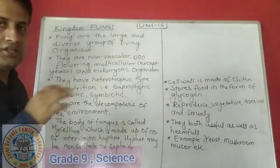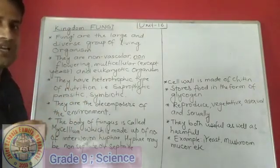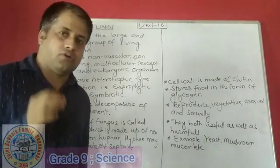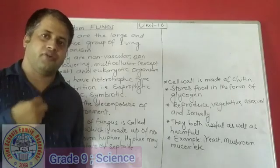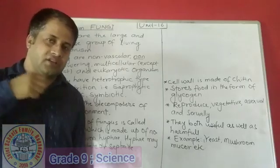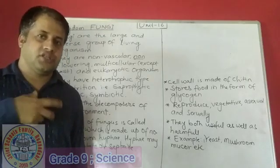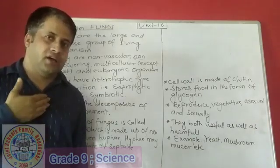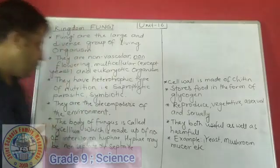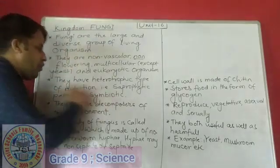Another type of nutrition present in fungi is parasitic nutrition. Parasites are organisms that live on the body of another organism — the host — and cause harm to the host while getting benefit from it. They take digested or absorbed nutrition from the host organism and get benefit for themselves.